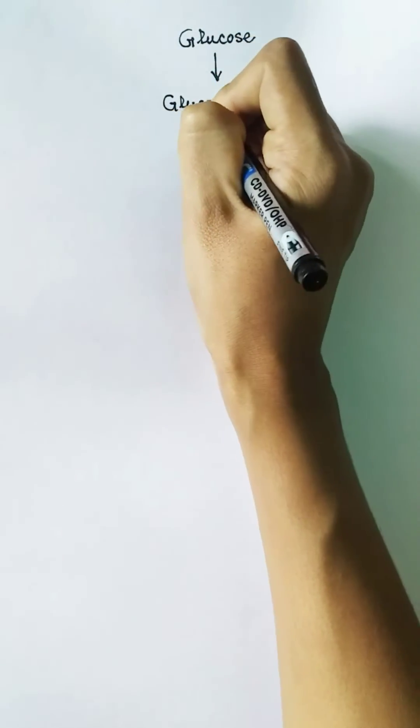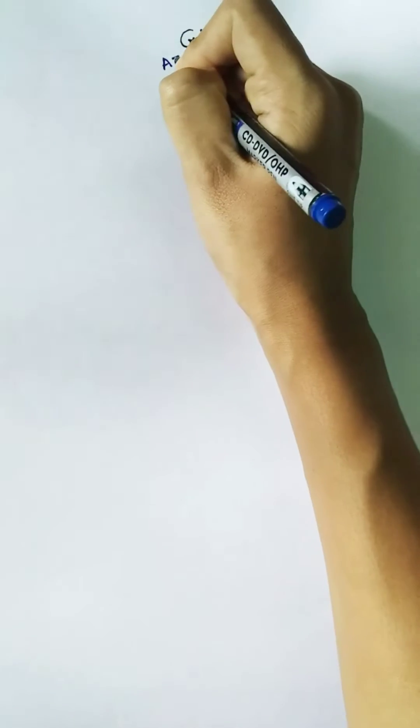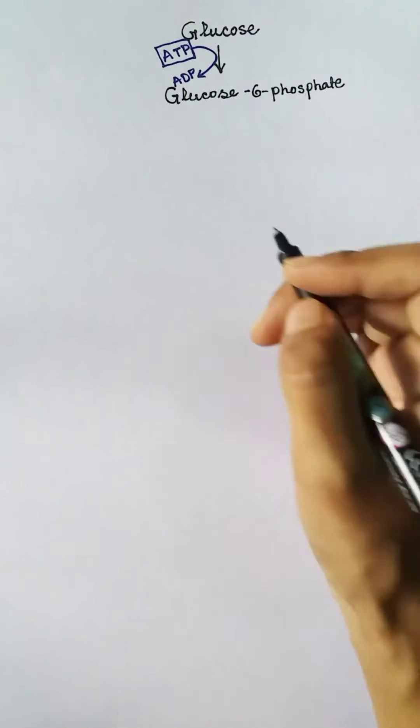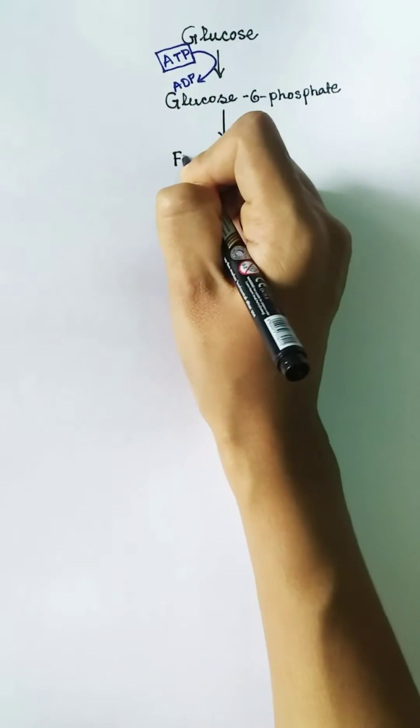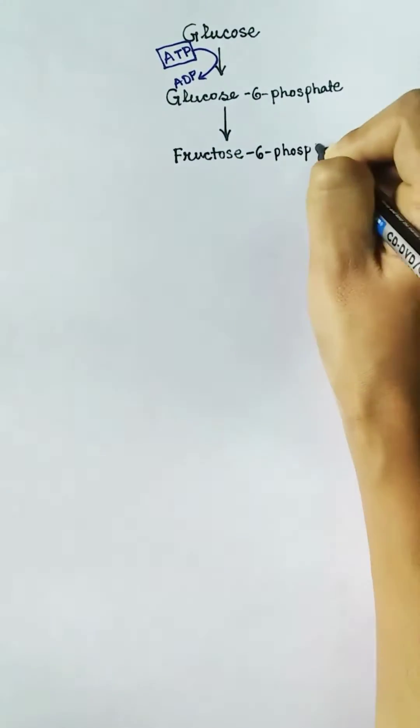At the beginning of the glycolysis pathway, two ATPs are consumed. The first ATP is consumed during conversion of glucose into glucose-6-phosphate. During this process, one phosphate is added to glucose, and for this addition of the phosphate, one ATP is used.